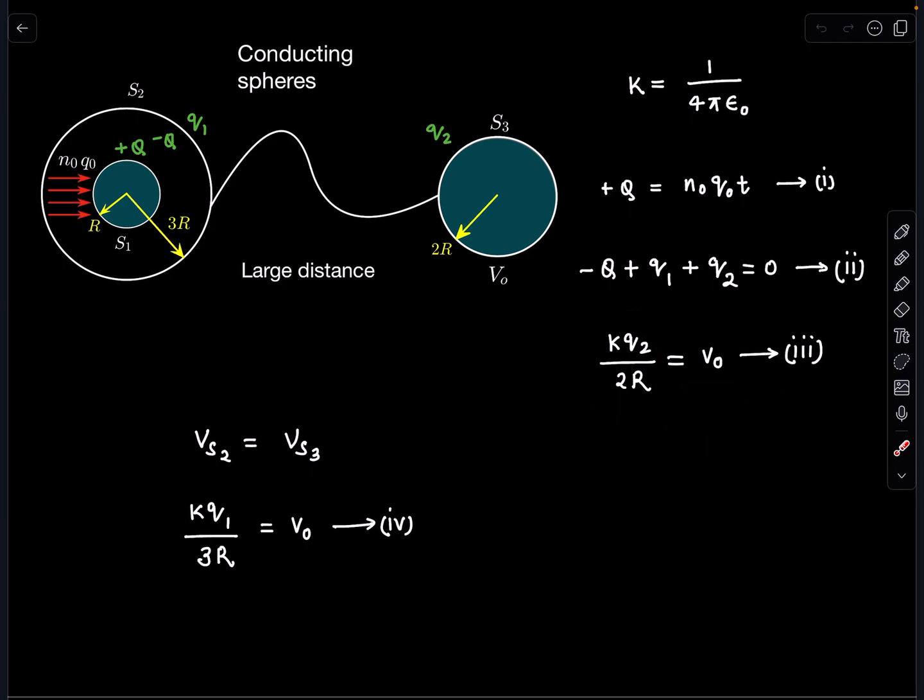Since they are connected with a conducting wire, the potential of sphere 2 and sphere 3 is going to be the same. So I am using the fourth equation: V_S2 = V_S3. V_S3 is already known. When I write the potential at S2, due to the inner charges it is zero here, and only due to q₁ it will come, so Kq₁/(3R) = V₀.